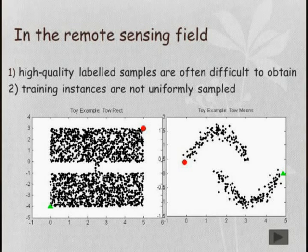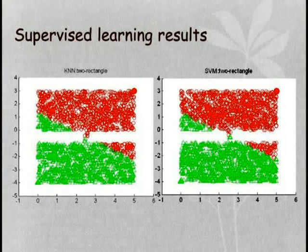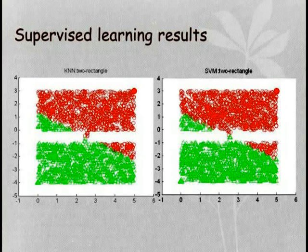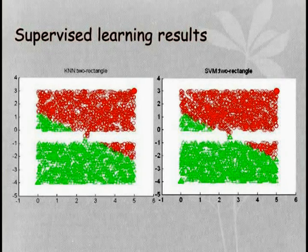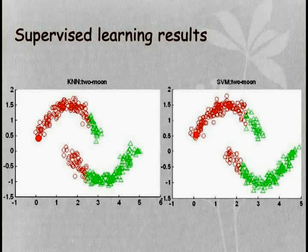Here is another example. Based on this data, we can see the classification result by SVM. We can see that this is not the correct classification, showing limitations of supervised learning approaches.